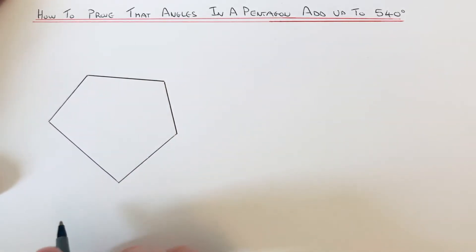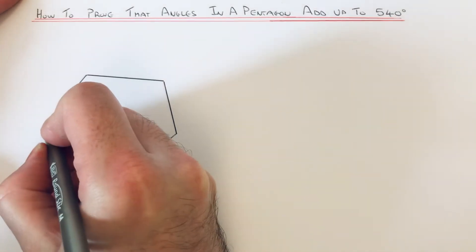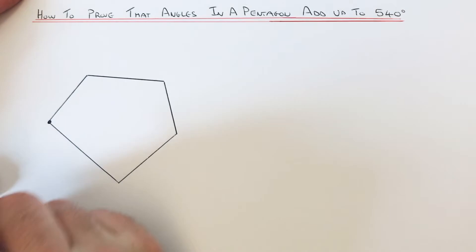So the way you do this then is pick a corner of your pentagon, doesn't matter which corner you pick. So I'm going to pick this one on the left-hand side, and you just need to draw in the diagonals using that corner that we've chosen.